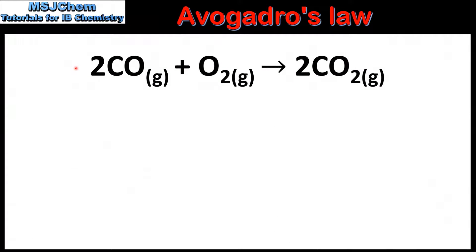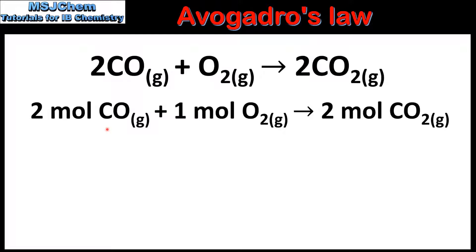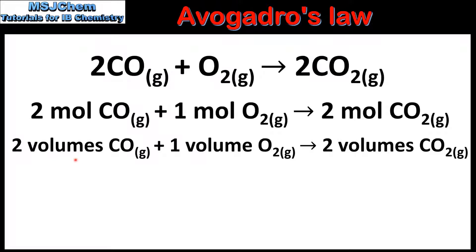In the first example we'll look at the reaction between carbon monoxide and oxygen to produce carbon dioxide. According to the balanced equation, 2 moles of carbon monoxide react with 1 mole of oxygen to produce 2 moles of carbon dioxide. If the reaction is carried out at a fixed temperature and pressure, we can treat the mole ratios as volume ratios. So we can say that 2 volumes of carbon monoxide will react with 1 volume of oxygen to produce 2 volumes of carbon dioxide.